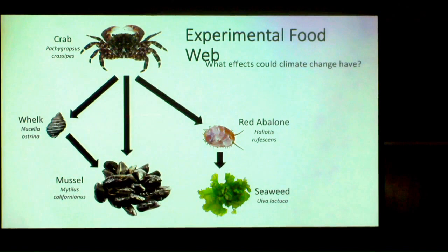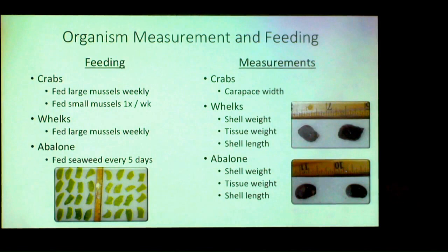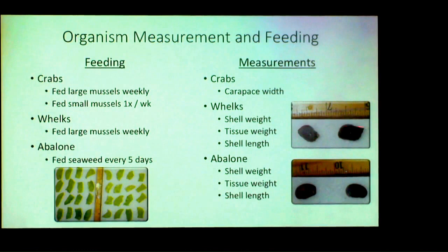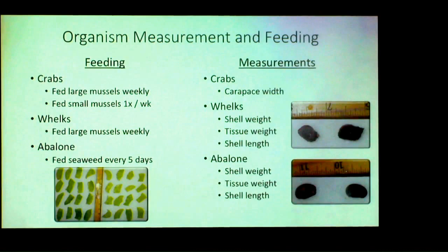We measured a whole bunch of aspects of feeding and growth in all the species, especially the shelled ones. The whelks are Nucella austrina, pretty common on rocky shores here. There's a hint of red around the edge of their shells — that's nail polish — so we could see how much lateral growth they had over the experiment, and it was a surprisingly large amount. We also weighed and measured them before and after. We fed everything weekly, and abalone every five days, measuring feeding for all species to ensure any effects weren't just due to reduced eating.